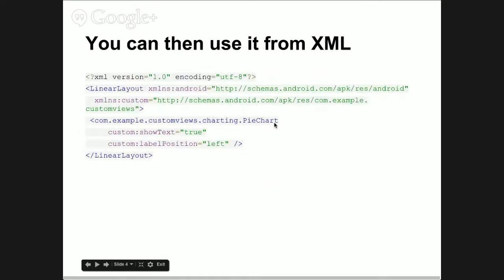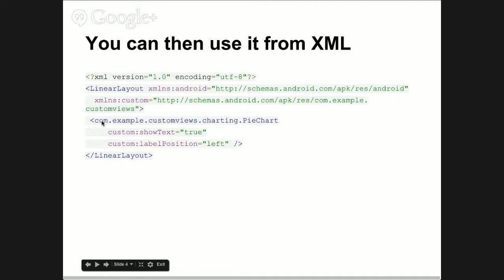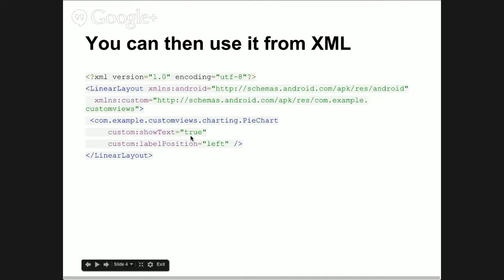This is the only important thing. If you use a TextView, you know you can say 'text view' and then write what's in it. But if you write your own view, how do you call it? You use the Java convention of giving the fully qualified name for the class you want to use. Your class has to subclass View. If your class is called PieChart, the full path might be 'com.example.customviews.charting.PieChart'.